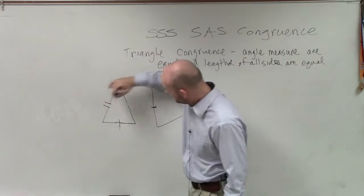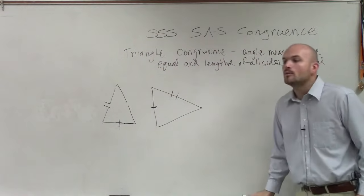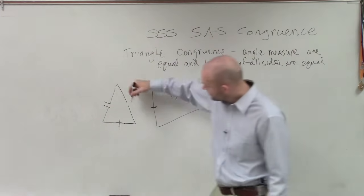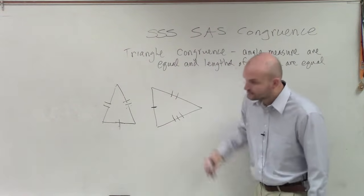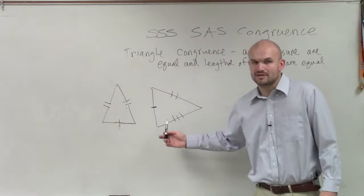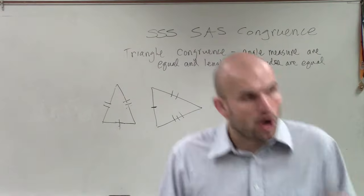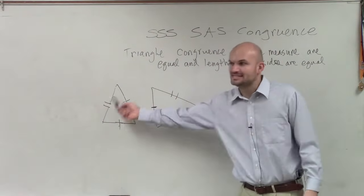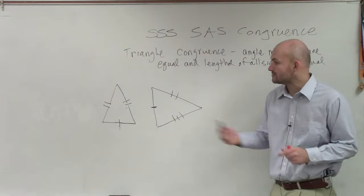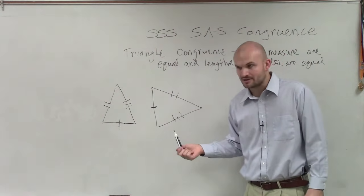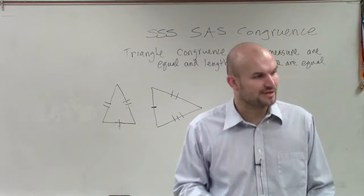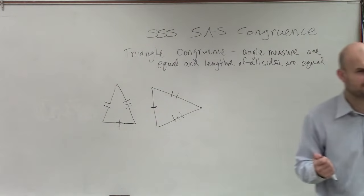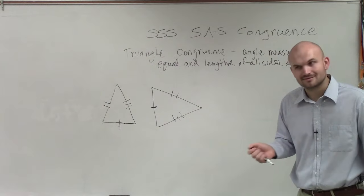And if I give this one two tick marks and that one two tick marks, that is telling you that side is equal to that side. And on the third one, if I have three tick marks here and three tick marks there, that's telling you that side is equal to that side. When we have all three sides equal to all three sides, we call this Side-Side-Side — each side is congruent to the other side. So these two triangles are congruent in measure. And if their sides are equal, their angles will be equal as well.